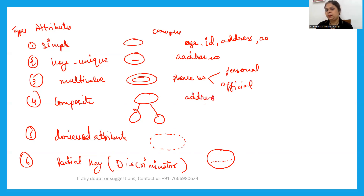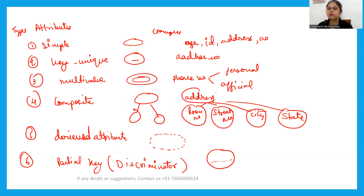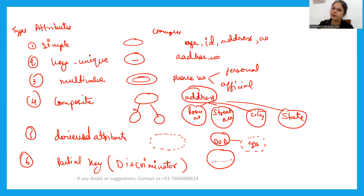Composite means an attribute is made up of many parts. For example, address is a composite attribute because it consists of room number, street number, city, and state — all forming the address attribute together. A derived attribute means its value is calculated from another attribute. For example, if you know the date of birth, you can calculate the age — so age is derived from date of birth.